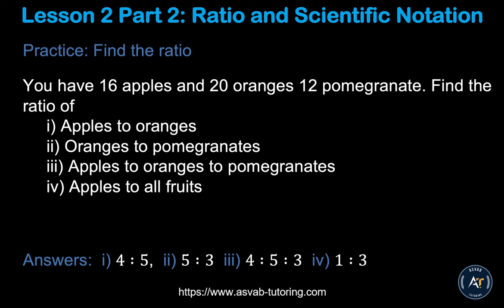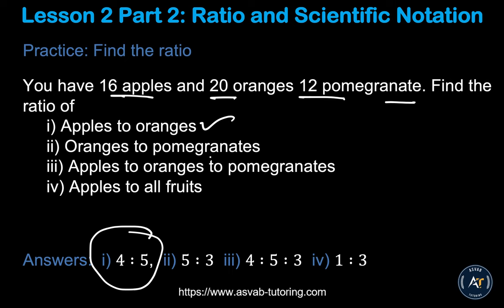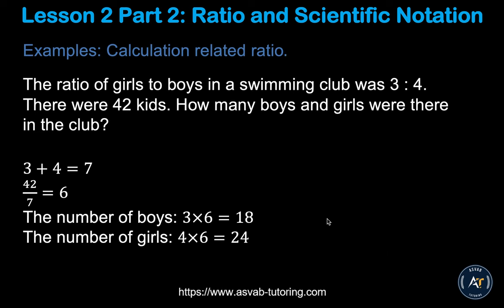Here's a practice example you can try yourself: you have 16 apples, 20 oranges, and 12 pomegranates. Find the following ratios. Apple to oranges is 4 ratio 5. Oranges to pomegranates is 5 ratio 3. And apple to orange to all fruits is 1 ratio 3. Try it yourself to make sure you understand.